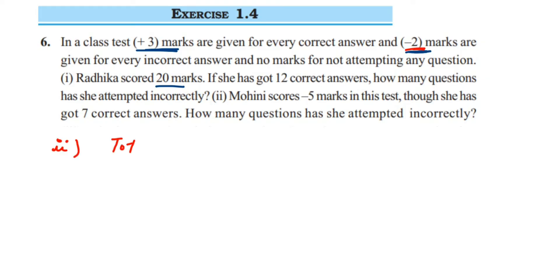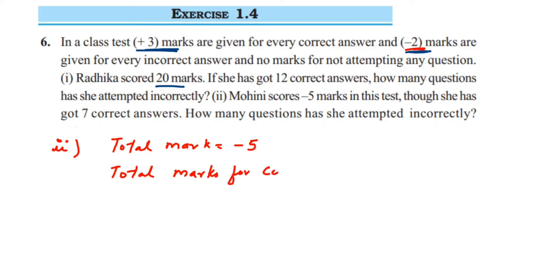Let's find out — it's similar to the first question. Total marks are minus 5. Now we find total marks for the correct answer: for every correct answer they give 3 marks, and she got 7 correct answers, so 7 multiplied by 3 equals 21 marks. Total she has got 21 marks for correct answers.